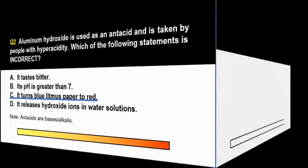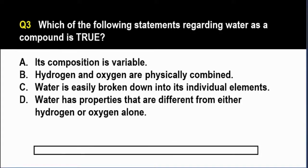For question number three, which of the following statements regarding water as a compound is true? A. Its composition is variable. B. Hydrogen and oxygen are physically combined. Letter C. Water is easily broken down into its individual elements. And D. Water has properties that are different from either hydrogen or oxygen alone.